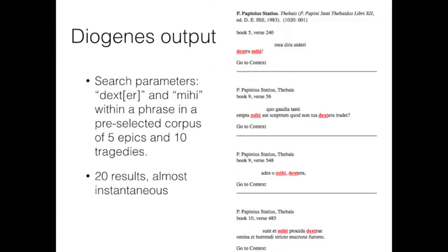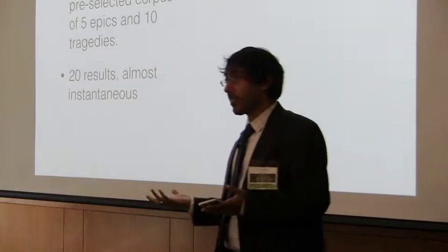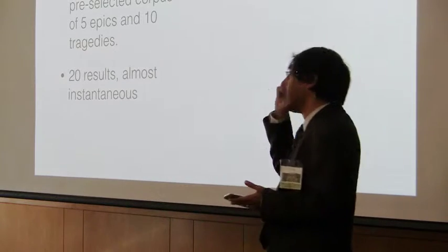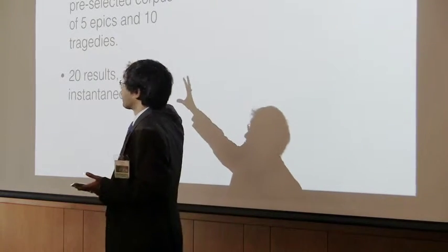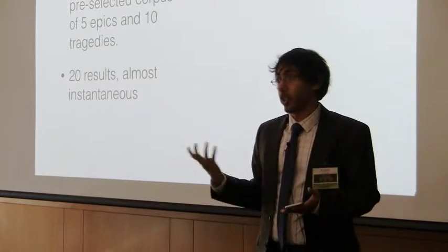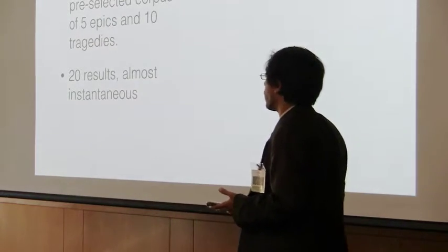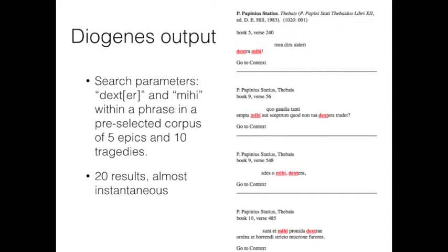So I put in some search parameters. You can see here that I put in the first four letters, D-E-X-T, from that phrase we looked at. I put in square brackets, E-R. So it would search for D-E-X-T-E or D-E-X-T-R to encompass both possibilities. And I wrote the word for me, mihi. And I said, find these two words within a phrase in a pre-selected corpus of five epics and ten tragedies. The results come almost immediately. One of the great things about Diogenes because it's doing exact searching is that the results appear very fast.